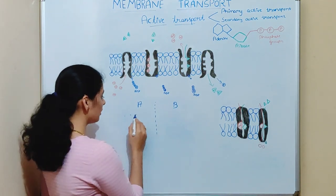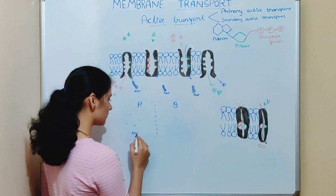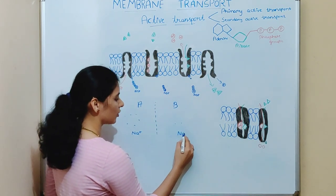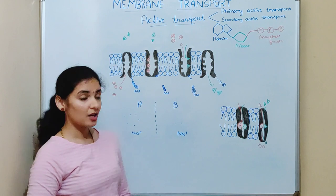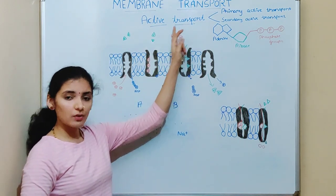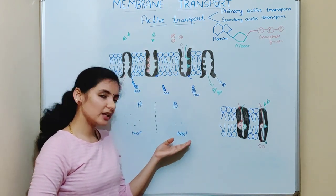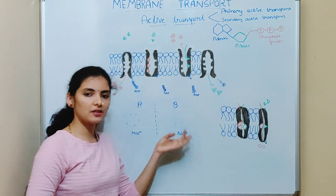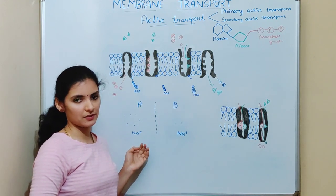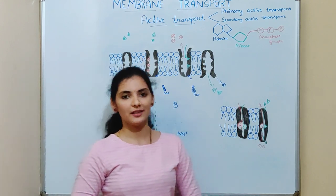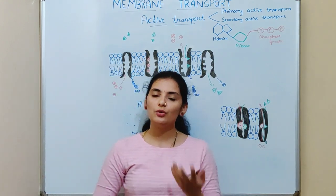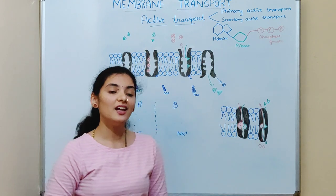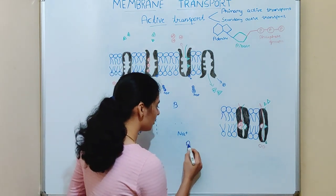Say about 20 molecules of sodium ions are present in region A and two molecules of sodium ions are present in region B. According to active transport, sodium ions will move from region B to region A — that is, from their low concentration region to their high concentration region — with the expenditure of energy. The cell itself will provide the energy in the form of an ATP molecule.